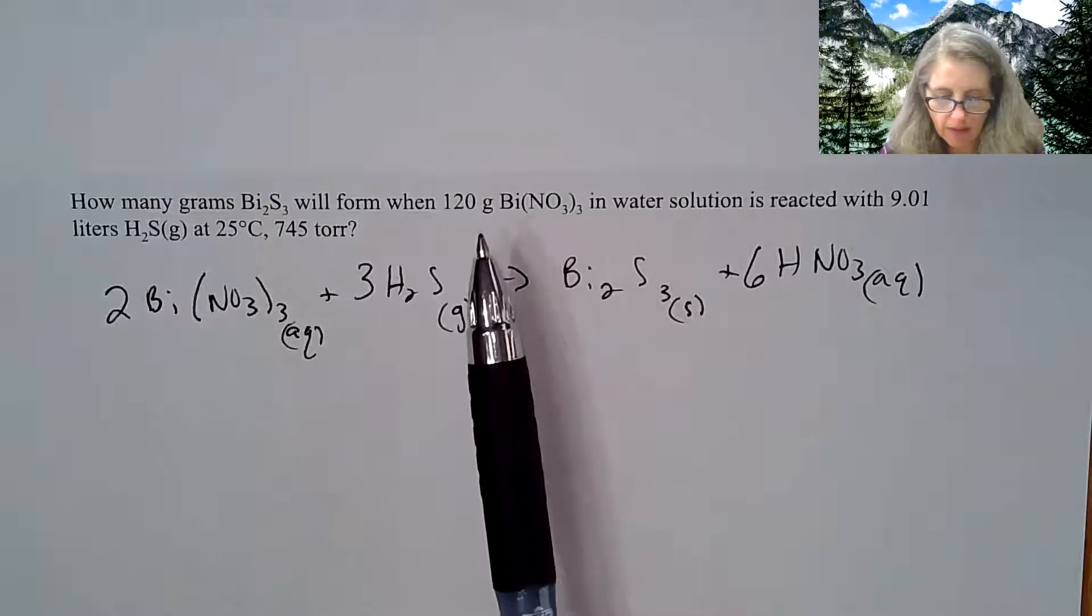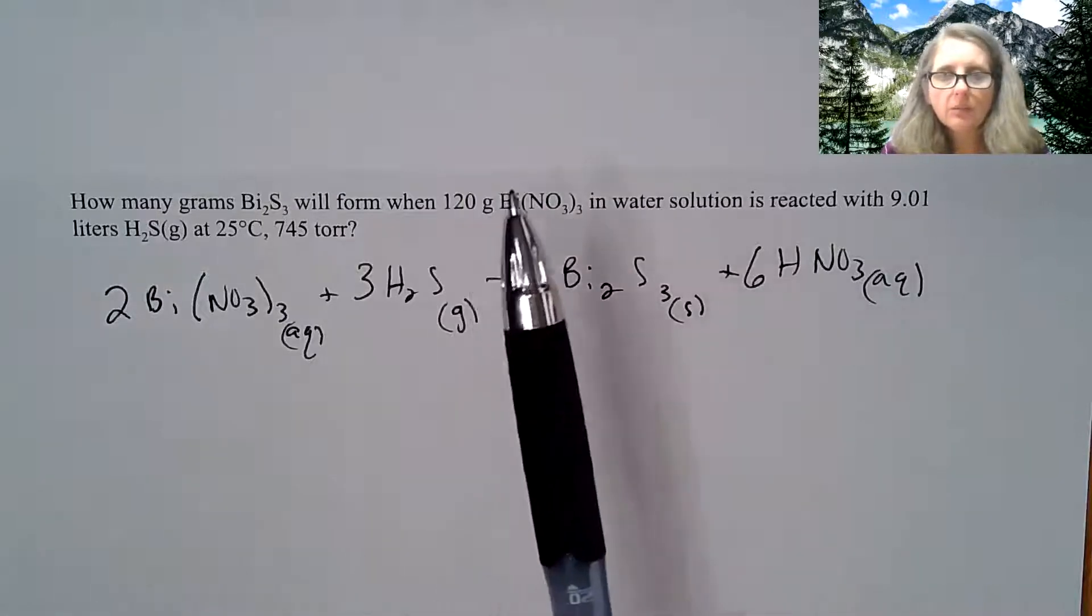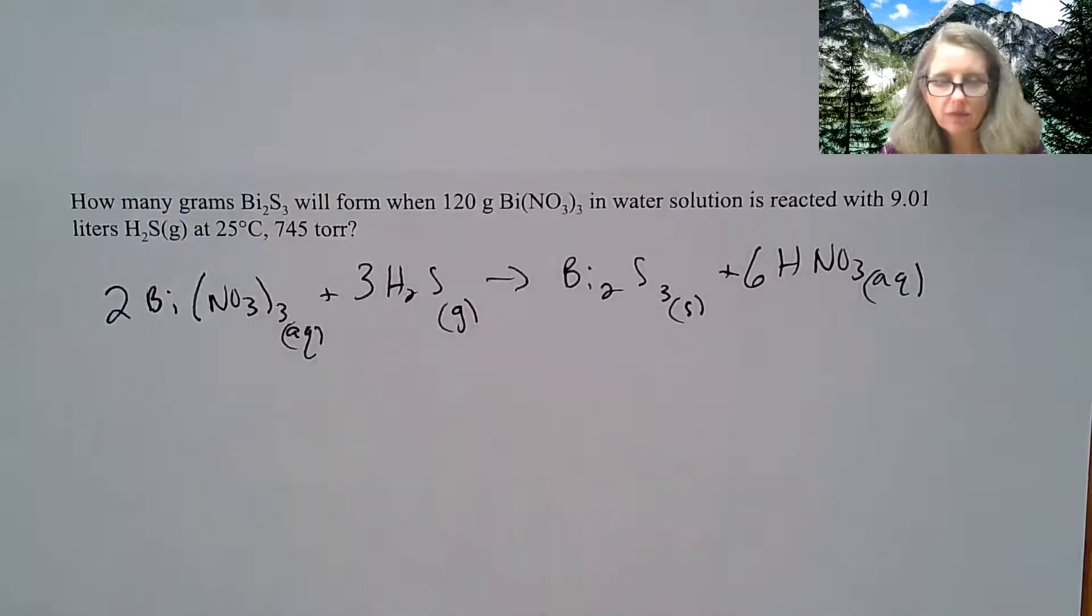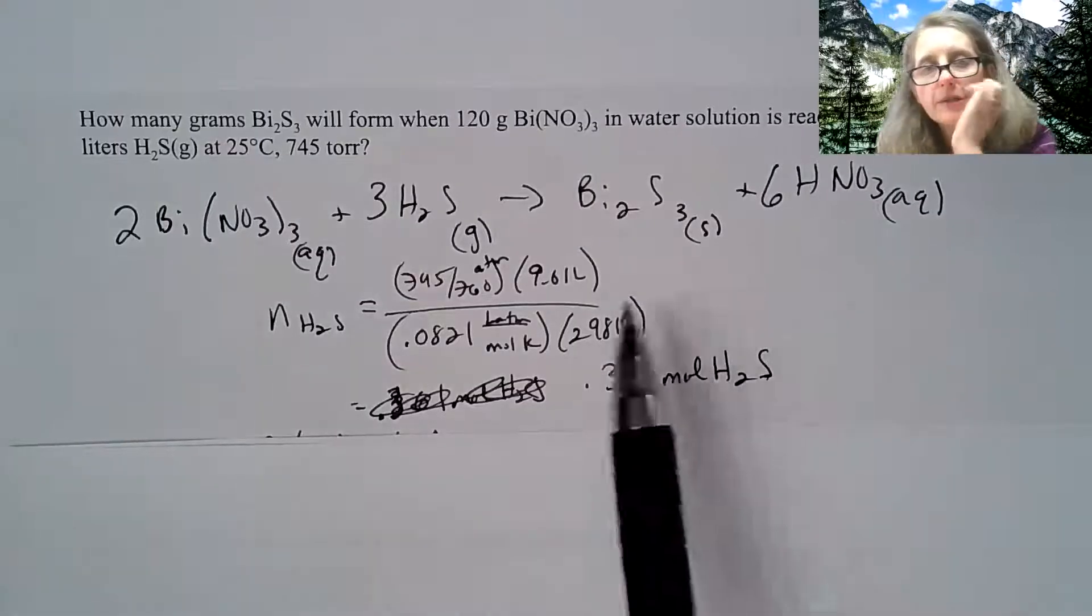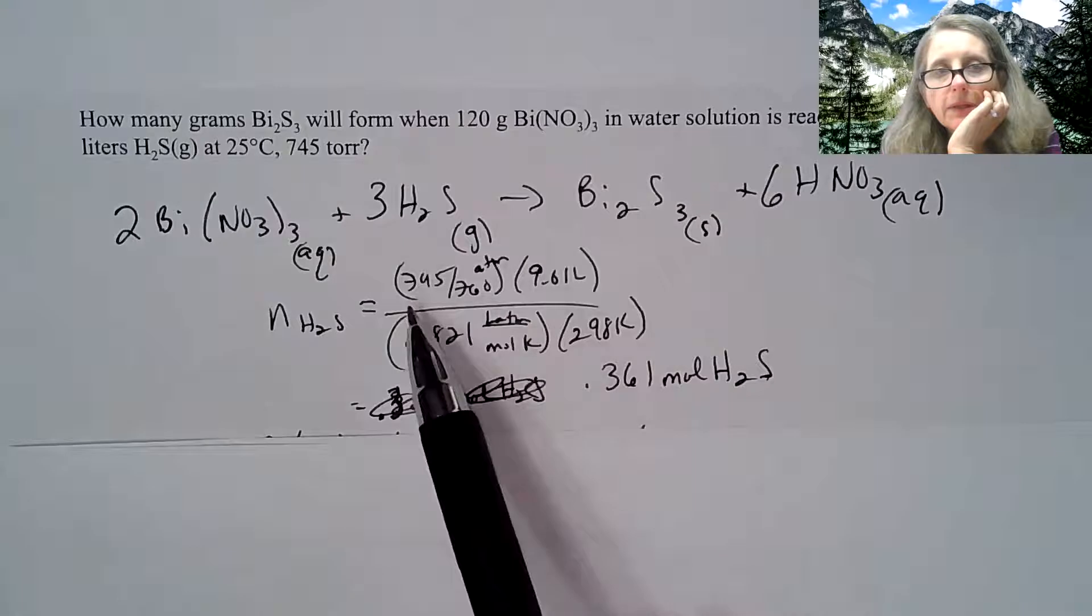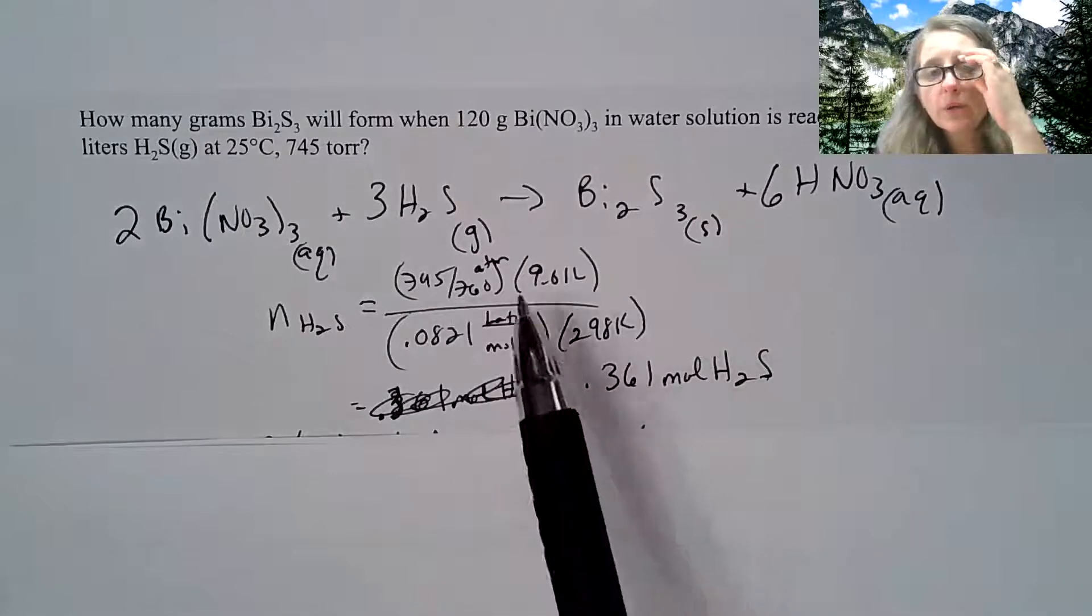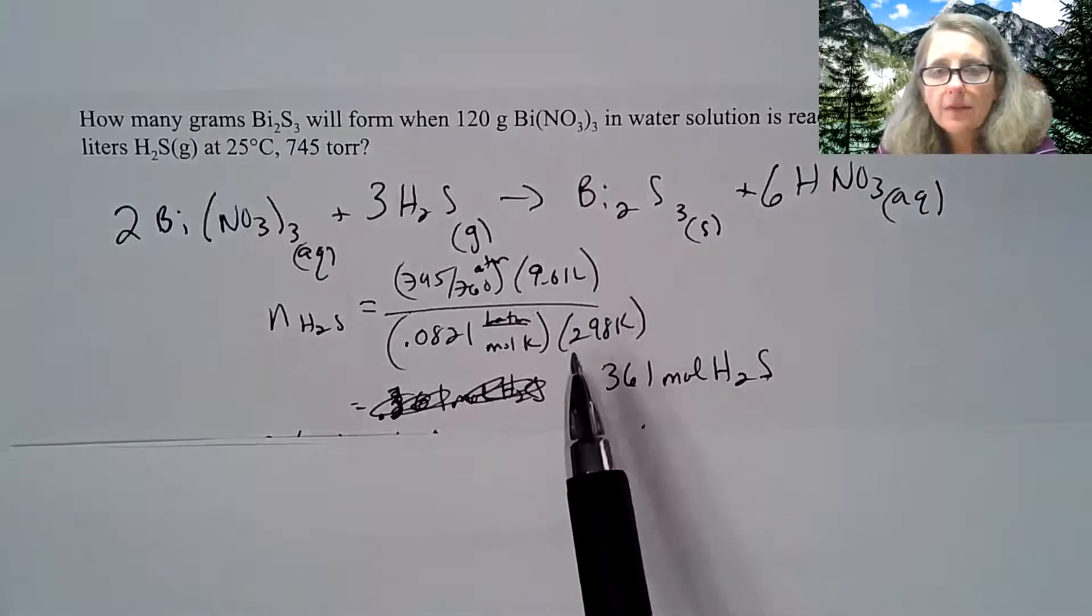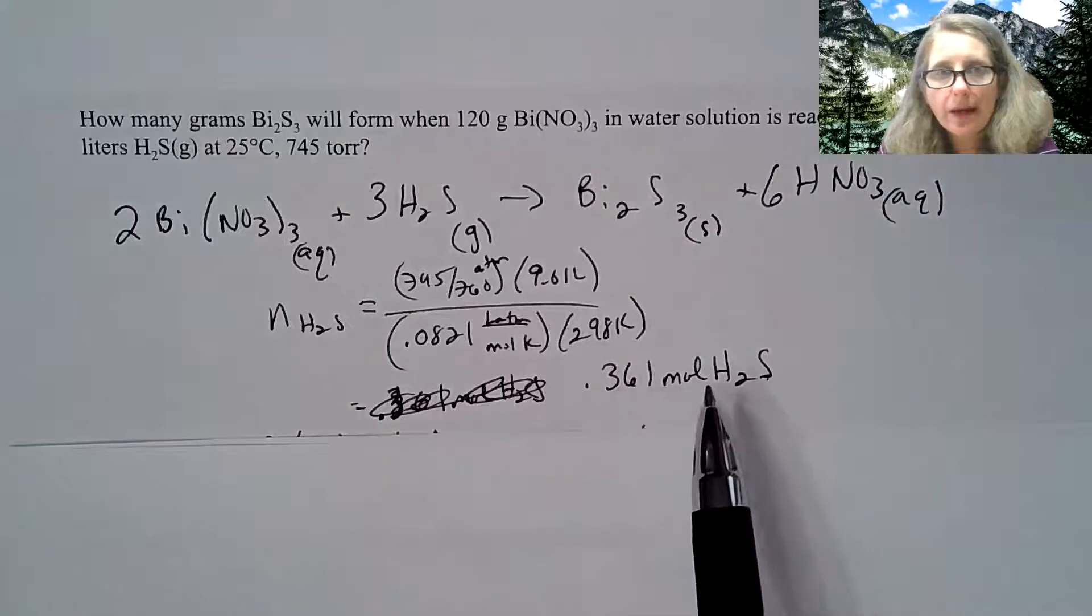I'm given the grams here of the bismuth(III) nitrate. So I use PV equals nRT in my formula here. The 745 torr I have to convert to atmospheres. I have liters and then I have my Kelvin, so I end up with 0.361 moles of H2S.